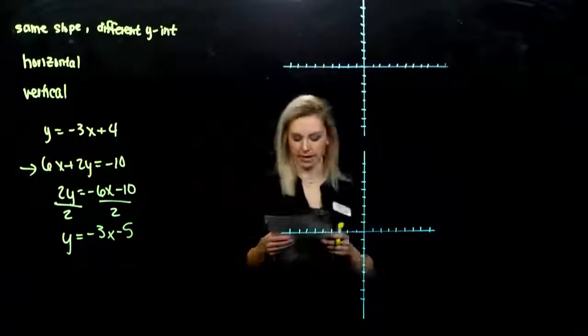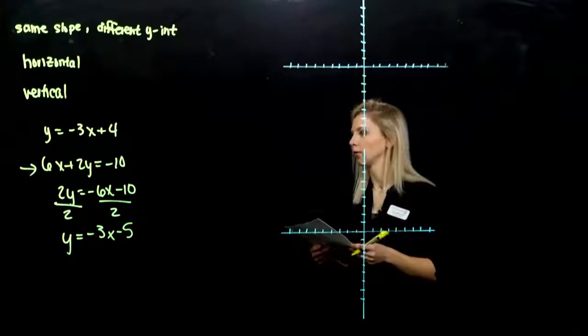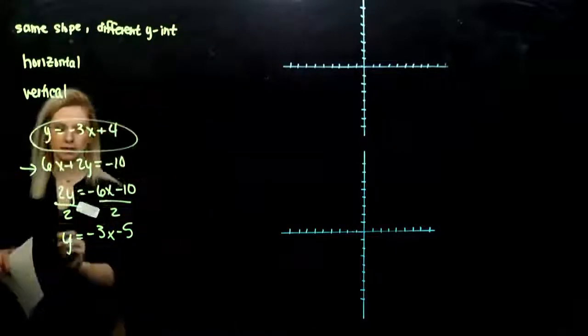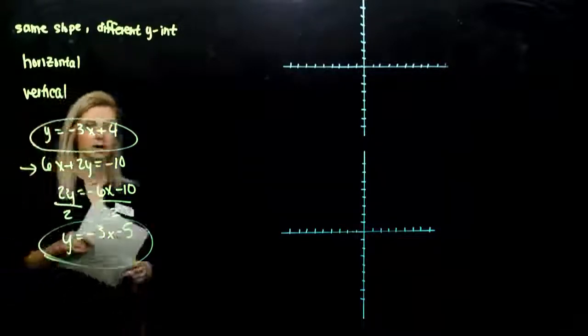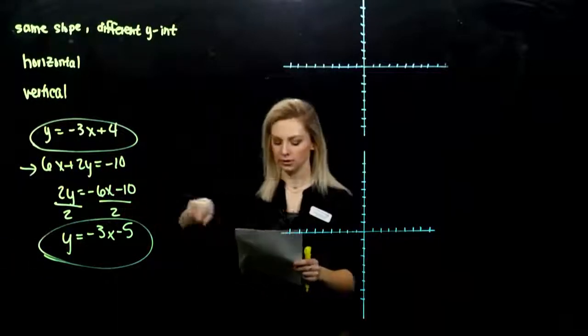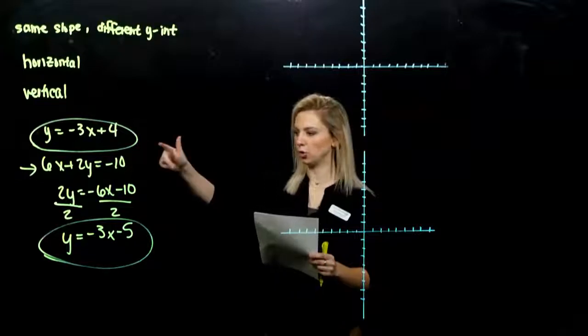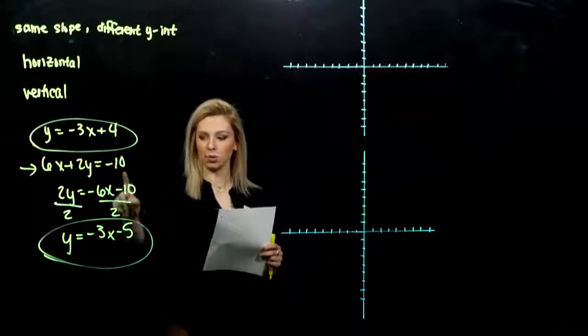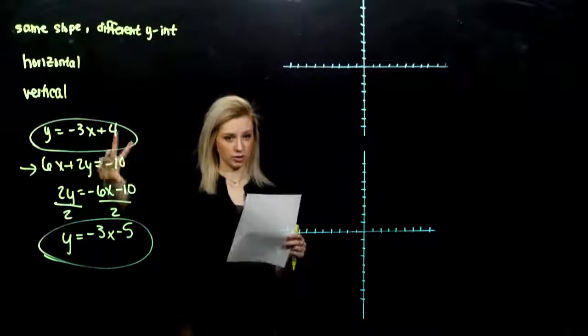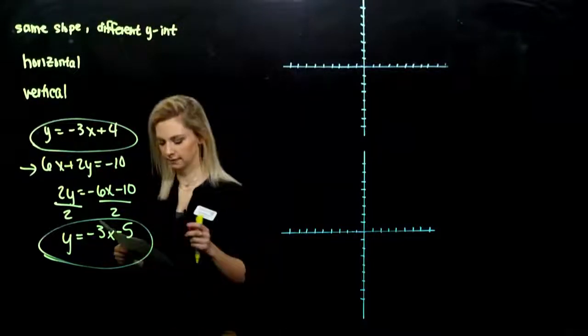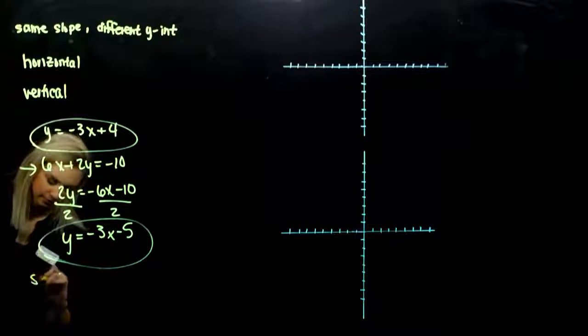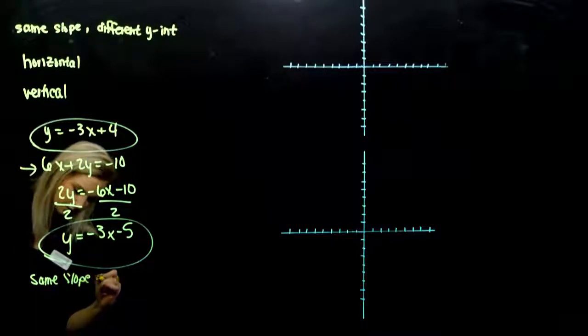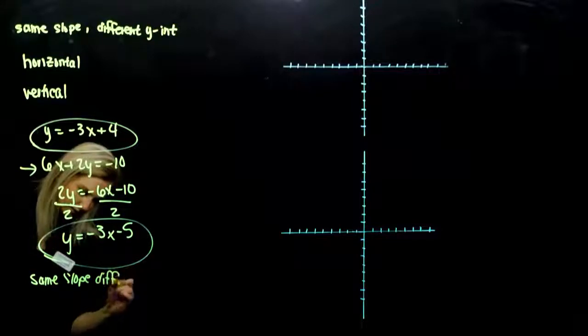So now that we have the same form, our first equation and the second one, we can compare between the two. So let's talk. Do they have the same slope? Yes. Same constant on the front of x and different y-intercepts. So the relationship between these two lines, they're parallel. So we have same slope and different y-intercepts.